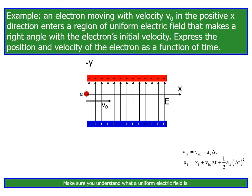Example: An electron moving with velocity v0 in the positive x direction enters a region of uniform electric field that makes a right angle with the electron's initial velocity. Express the position and velocity of the electron as a function of time. Let's say that an electron is entered in the electric field between positively and negatively charged plates.